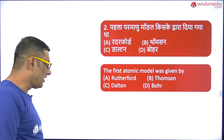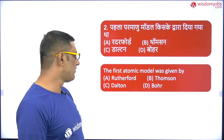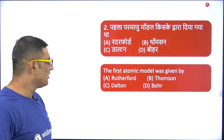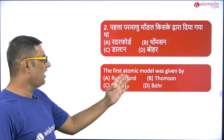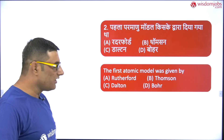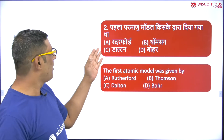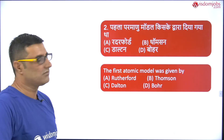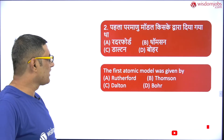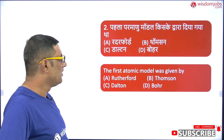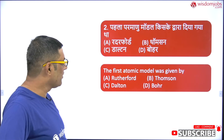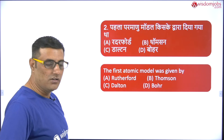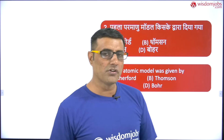The question for this video is: the first atomic model was proposed by whom? Options are: Rutherford, Thompson, Dalton, or Bohr. In Hindi: pehla parmanu model kiske dwara diya gaya tha? Options are Rutherford, Thompson, Dalton, or Bohr.